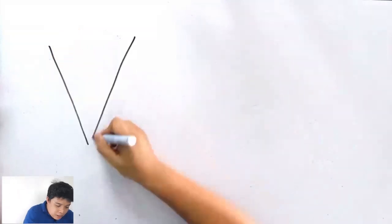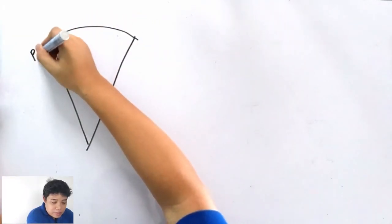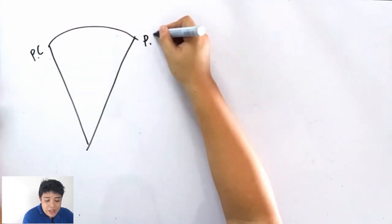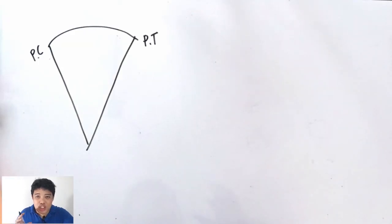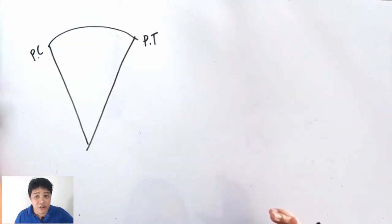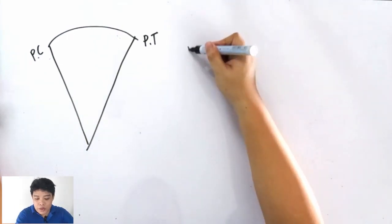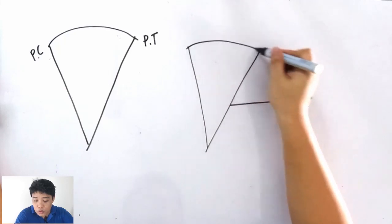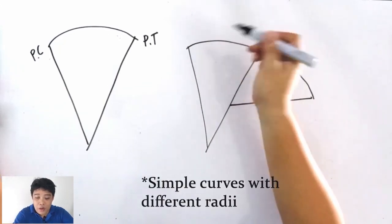The basic curve is the simple curve. This is the point of curvature and this is the point of tangency — technically a simple curve. A simple curve is just a sector of a circle. The compound curve is made up of two or more simple curves with different radii.